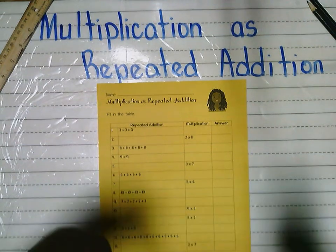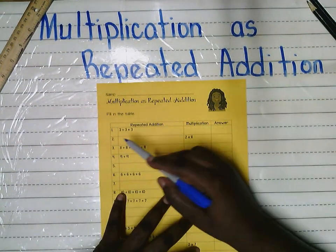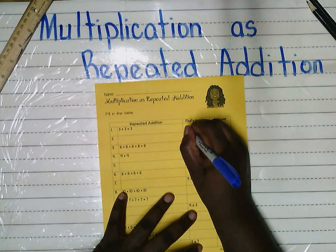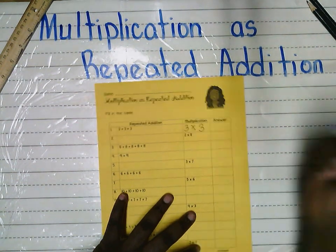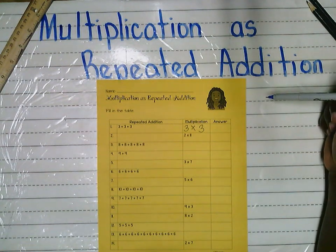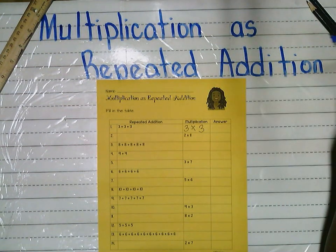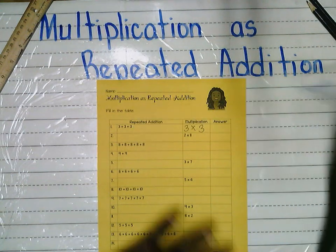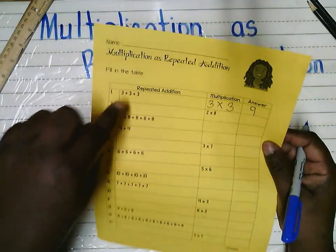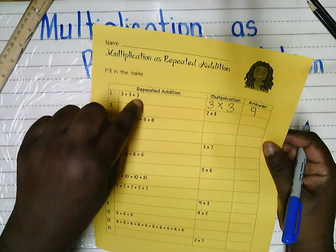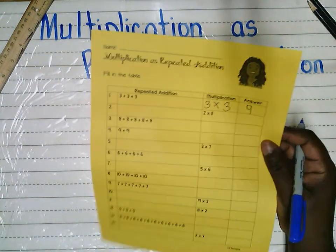For three plus three plus three, I know three is going to be a factor. How many groups of three? I have three groups of three, so that's three times three. Skip counting — three, six, nine. So three plus three plus three is the same as three times three, and the answer to both is nine.